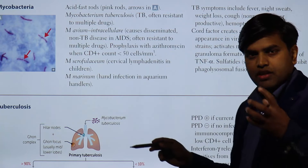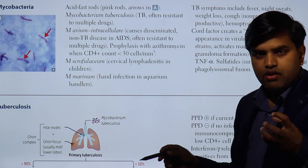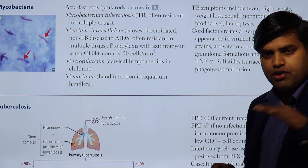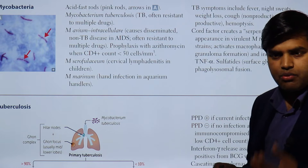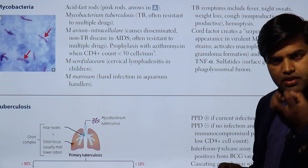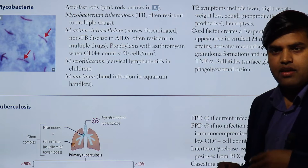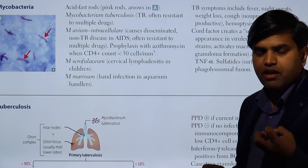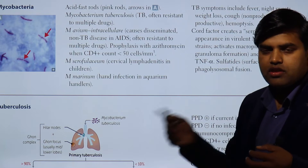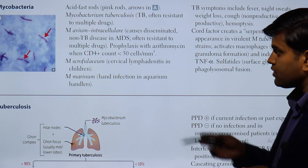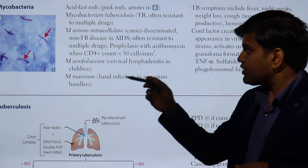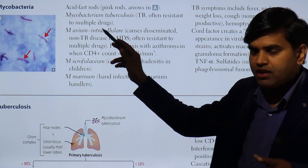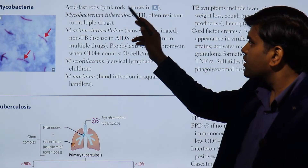Because mycobacteria contain mycolic acid, they preserve their color. In the first step, we apply carbolfuchsin then heat it so the dye goes inside; then we decolorize. Since the dye is now trapped, it does not lose its color even up to 20% sulfuric acid. So it is known as acid-fast, and the carbolfuchsin color appears as a pink rod.